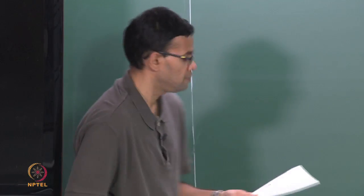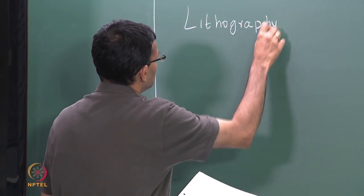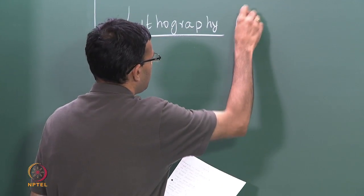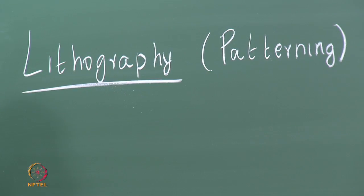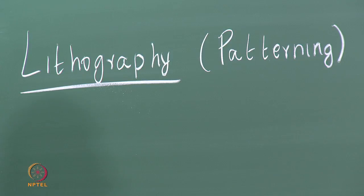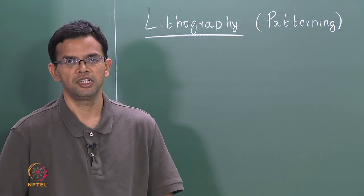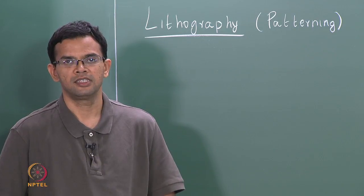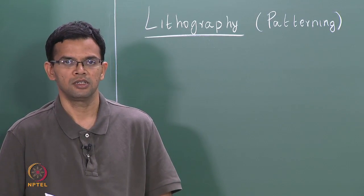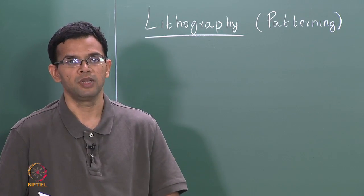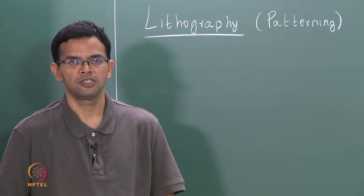Today we are going to look at lithography, another term for which is patterning. This is one of the most important steps in IC fabrication. The ability to pattern smaller and smaller regions is what drives the miniaturization of circuits. When we started in the 1960s, typical circuits were a few micrometers long, but these days pattern sizes are of the order of nanometers, made possible by newer technologies and newer methods.